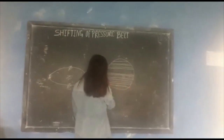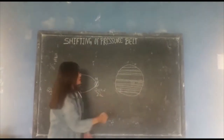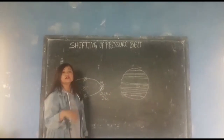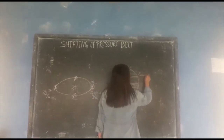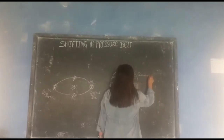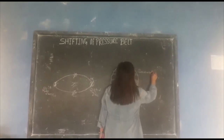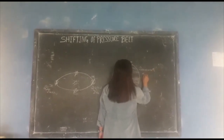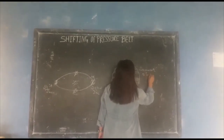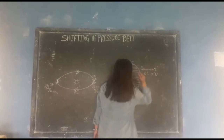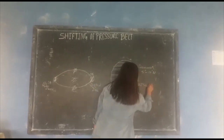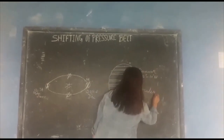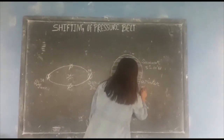There are about 7 pressure belts. During summer season, the pressure belts will shift about 5 to 10 degrees north and south.